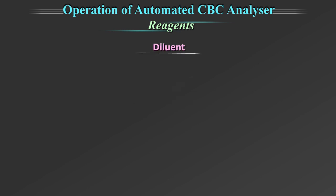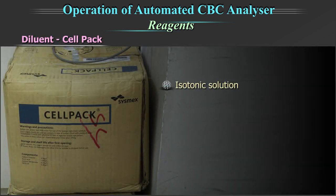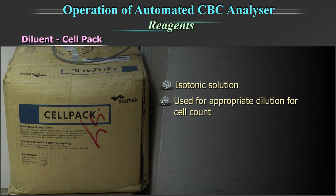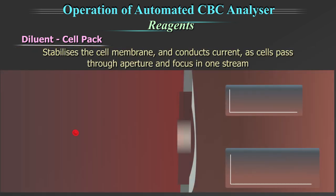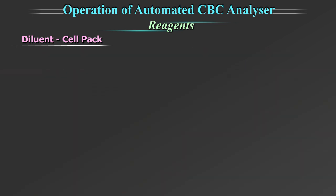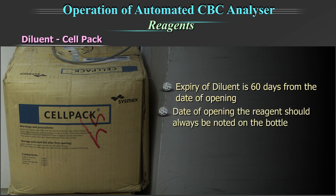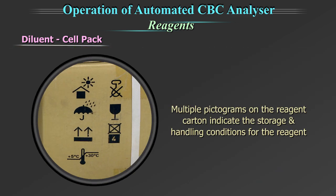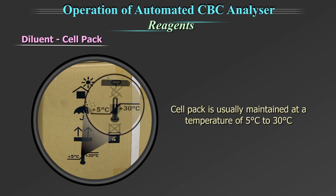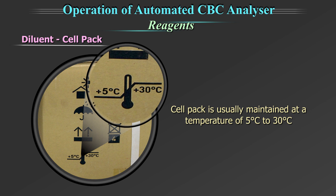The diluent — for example, cell pack — is an isotonic solution used for appropriate dilution for cell count. It stabilizes the cell membrane and conducts current as cells pass through the aperture and focus in one stream. The expiry of the diluent is 60 days from the date of opening. The date of opening should always be noted on the bottle. Multiple pictograms on the reagent carton indicate storage and handling conditions. The cell pack is usually maintained at a temperature of 5 to 30 degrees centigrade.